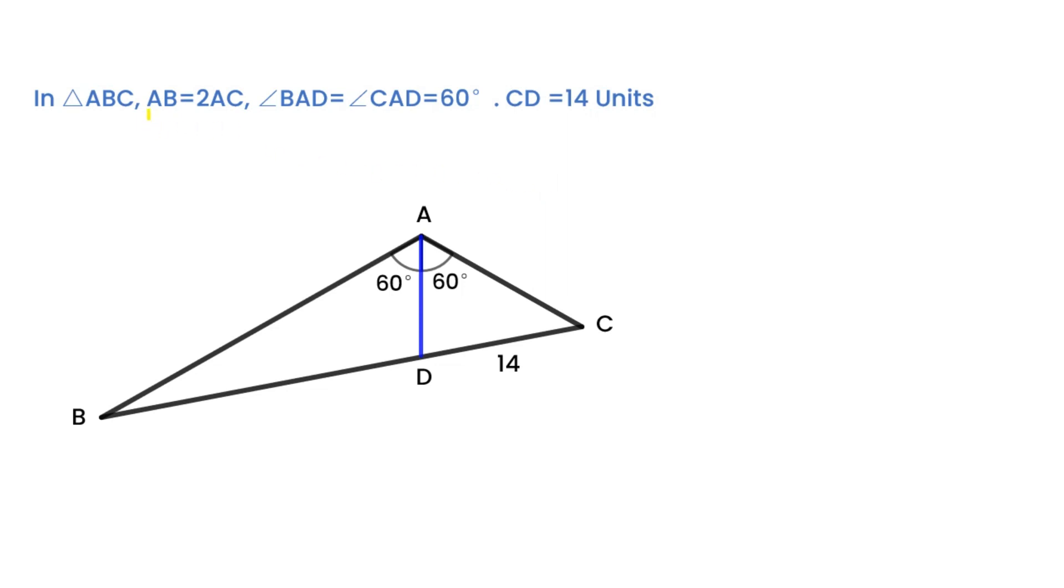In triangle ABC, segment AB equals 2 times AC, angle BAD equals angle CAD equals 60 degrees, CD equals 14 units. So, what's the value of AD?